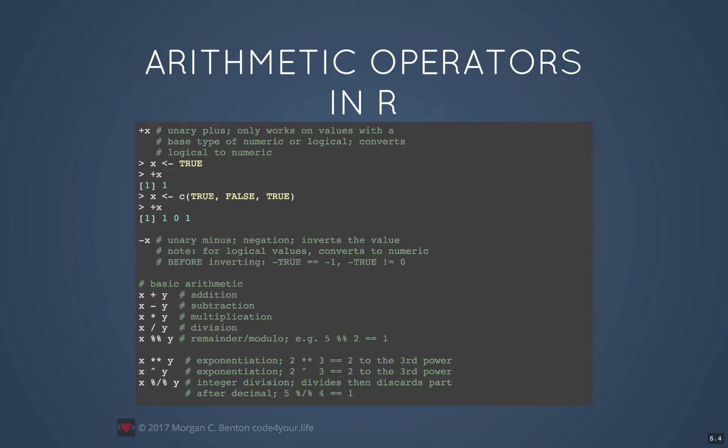The modulo operator in R uses two percent signs instead of a single one as with JavaScript. For the exponentiation operator, there are two versions of it — one is the double star like you've seen before, and the other is the caret symbol. R also has an operator for integer division which discards the decimal part, and that's percent forward slash percent, as shown here.